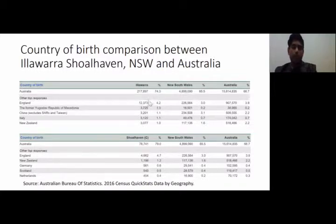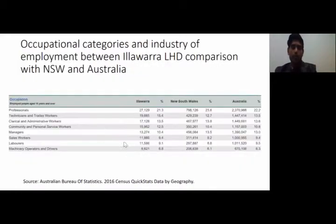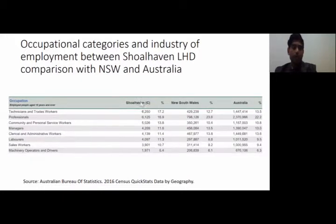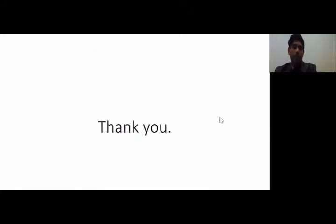More than three-quarters of the population in Illawarra and Shoalhaven were born in Australia, and the second most common country of birth is England in both districts. Occupational categories show that professionals have the highest employment in Illawarra, consistent with NSW and Australia, while in Shoalhaven, technicians and trade workers represent the highest employment category, followed by community and personal service workers and managers.